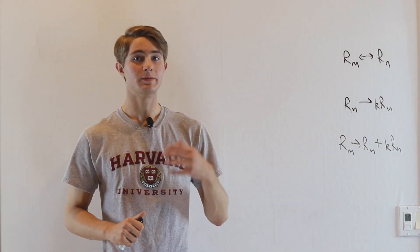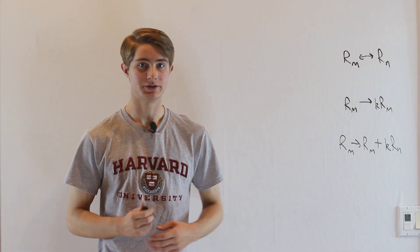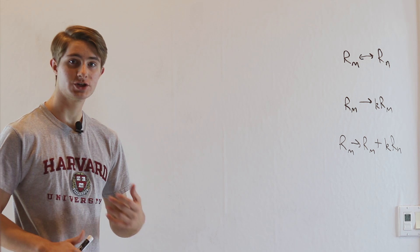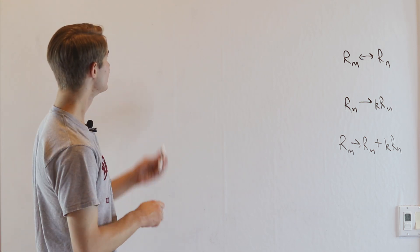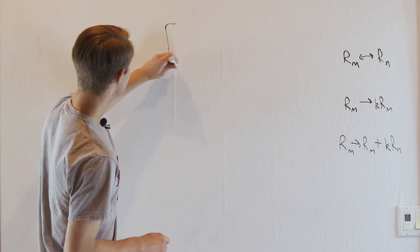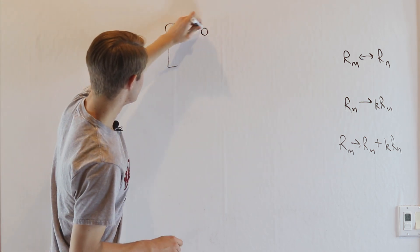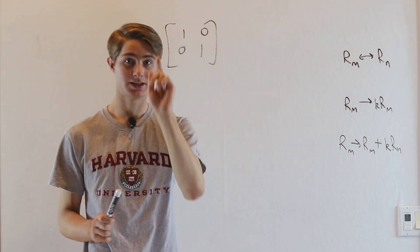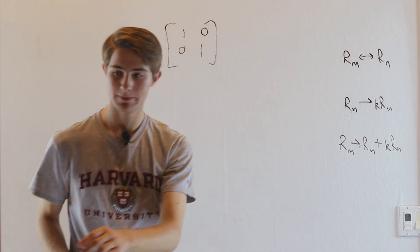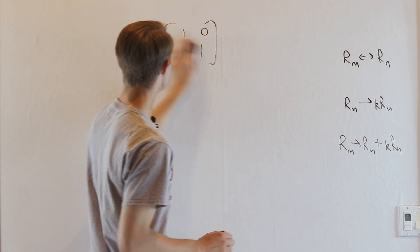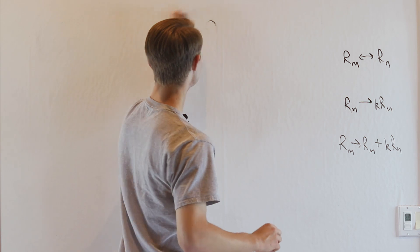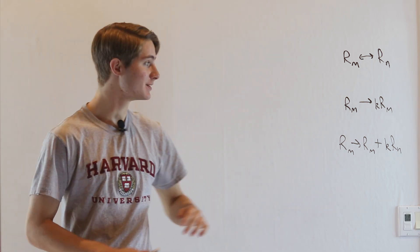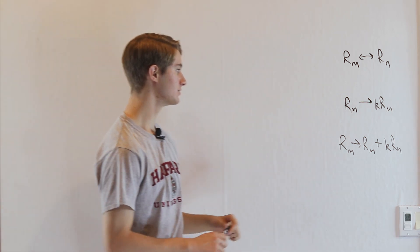We are going to learn about elementary matrices. The definition of an elementary matrix is that you take the identity matrix and you perform exactly one elementary row operation. There are three different elementary row operations, which means there are three types of elementary matrices.